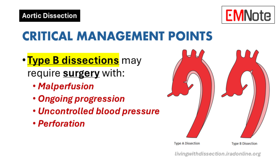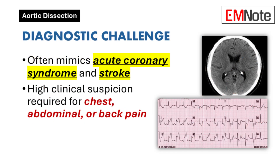Type B dissections are often managed medically, focusing on controlling blood pressure and heart rate. However, surgery may be necessary if the dissection is causing damage to vital organs, if blood pressure can't be controlled, or if the dissection is rapidly worsening. So surgery remains a possibility even with type B.